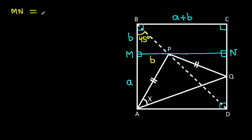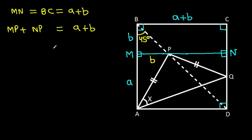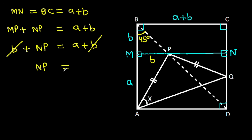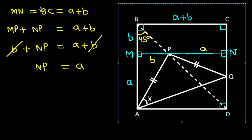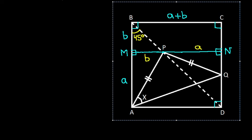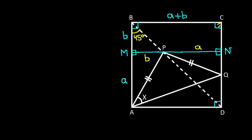MN will also be b. And MN is MP minus NP, which gives a minus b. Since MP is b, NP equals b minus (a minus b)... working this out, NP equals a. So NP is a and MP is b.